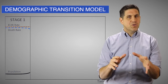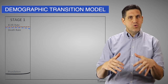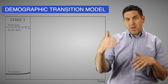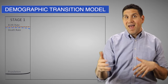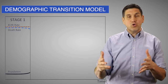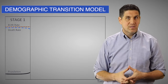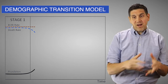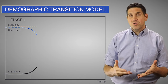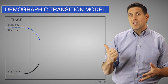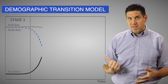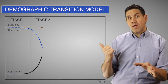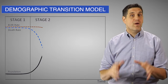But over time, people started to grow more food — not just for themselves, but to sell to other people — and that created agricultural-based economies. More food means less famine and higher living standards, so the death rate started to decrease. And at this point, during Stage 2, came the Industrial Revolution.